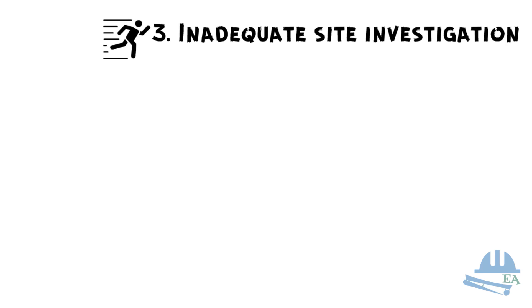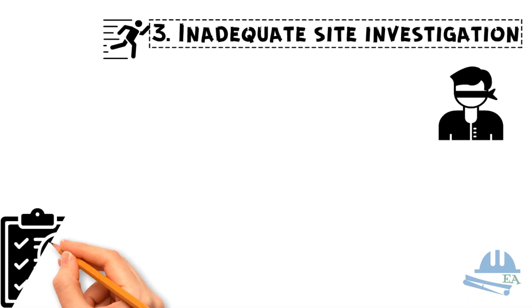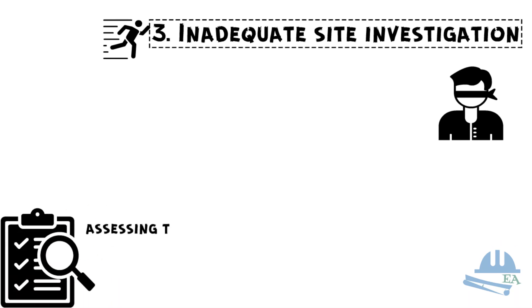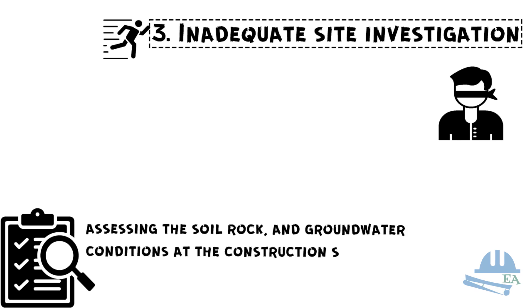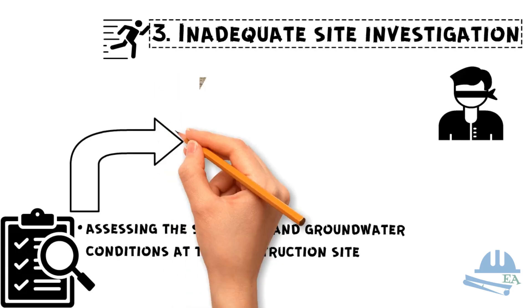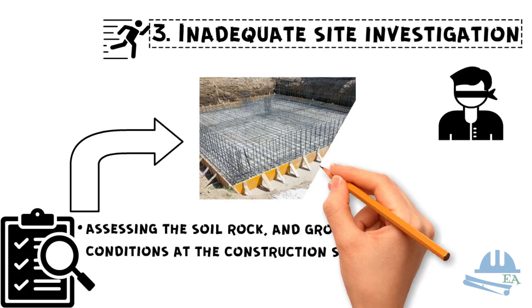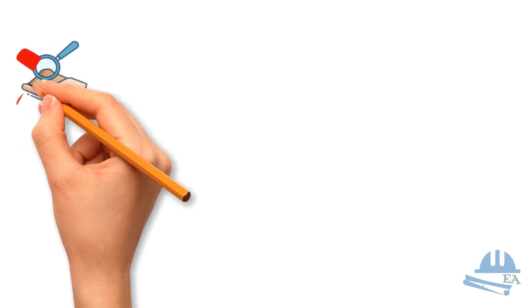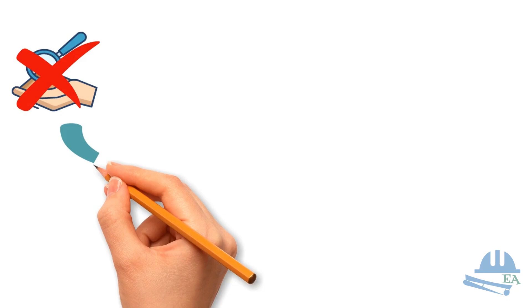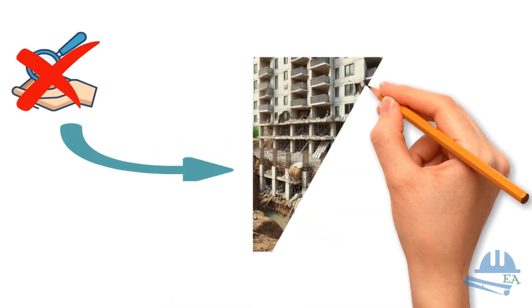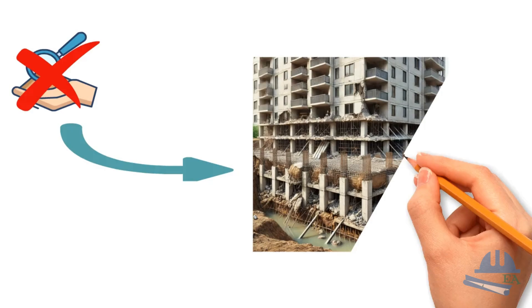Now, let's move on to the third common mistake in structural design, inadequate site investigation. This is one of the most overlooked aspects of structural design. Site investigation involves assessing the soil, rock, and groundwater conditions at the construction site. This information is vital for determining the appropriate foundation design and ensuring the overall stability of the structure. Inadequate site investigation can lead to an improper design of the foundation and thus compromising the entire project.